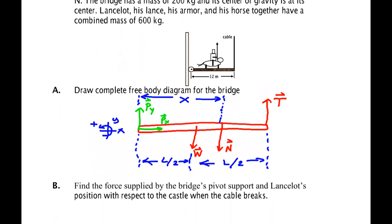Now, it says find the force supplied by the bridge pivot and Lancelot's position with respect to castle when the cable breaks. So now all of a sudden this cable goes away, so there's no T. There's only this bar or bridge with these forces: the normal force, the Px, the Py.